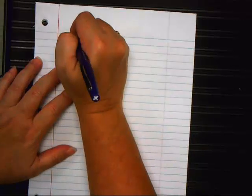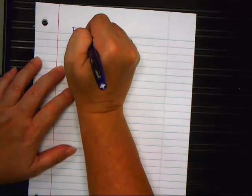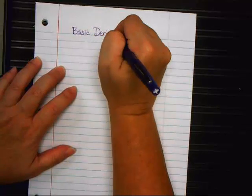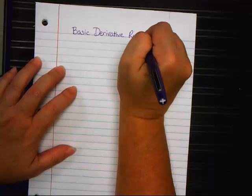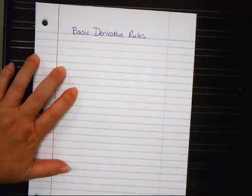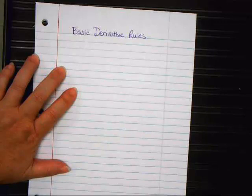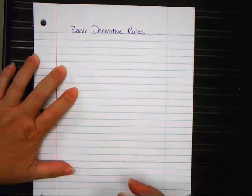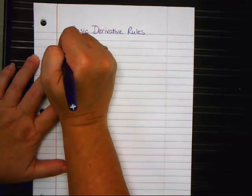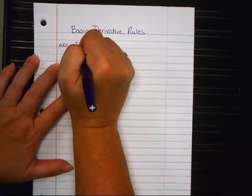Today we are talking about what are called basic derivative rules. I'm going to probably go into more detail than they have been doing in physics. Physics, they just show you the shortcuts. I'm going to now show you kind of why they work. So, this is A-K-A, shortcuts for derivatives.